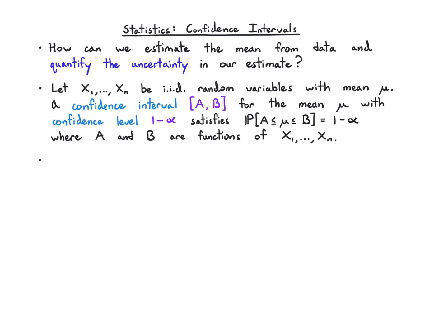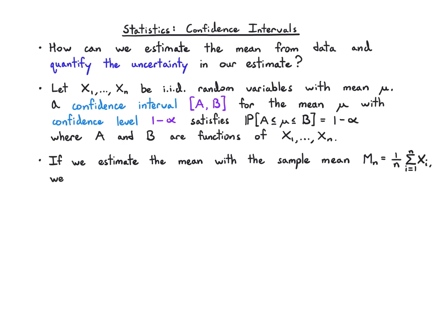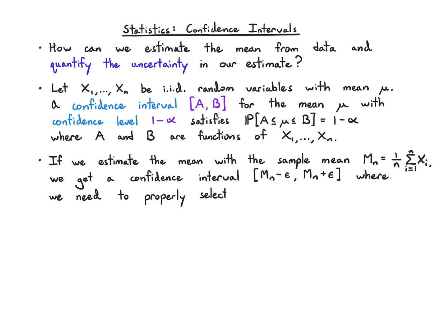What we want is an interval that captures the mean with probability 1 minus alpha. Usually what we're doing to estimate the mean is using the sample mean — we just take the data and average it. The confidence interval [a, b] will always take the following shape: it'll be the sample mean minus epsilon up to the sample mean plus epsilon, and we need to properly select this epsilon to get the confidence level 1 minus alpha.